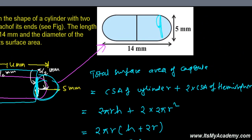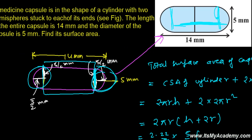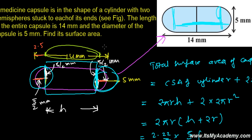Now we need the height of the cylinder, which is just the middle cylindrical portion — not including the hemispheres. Each hemisphere contributes a height of 5/2 = 2.5 mm, so both together give 5 mm. Therefore the cylinder height h = 14 − 5 = 9 mm.